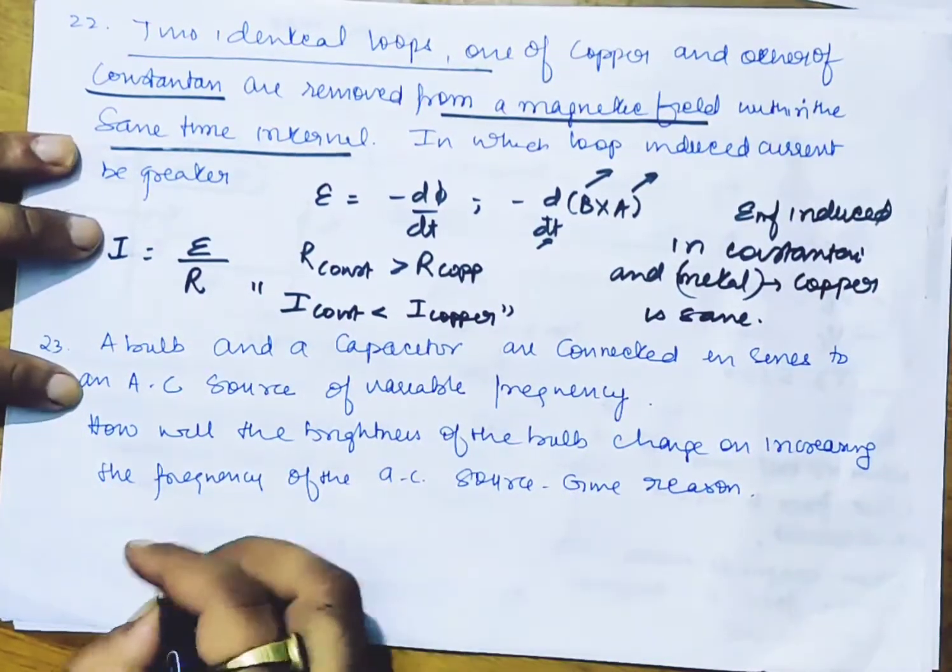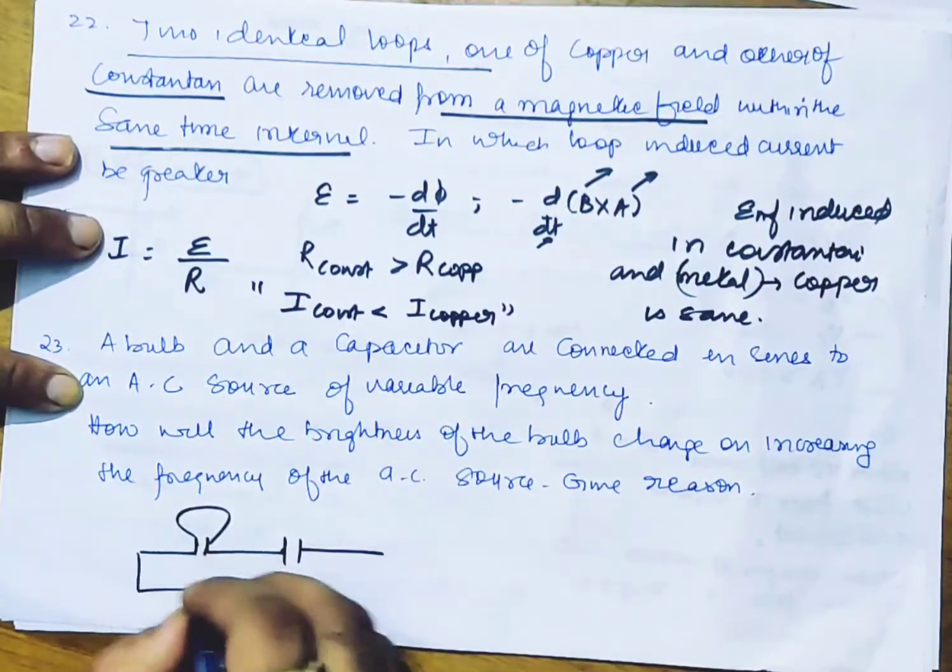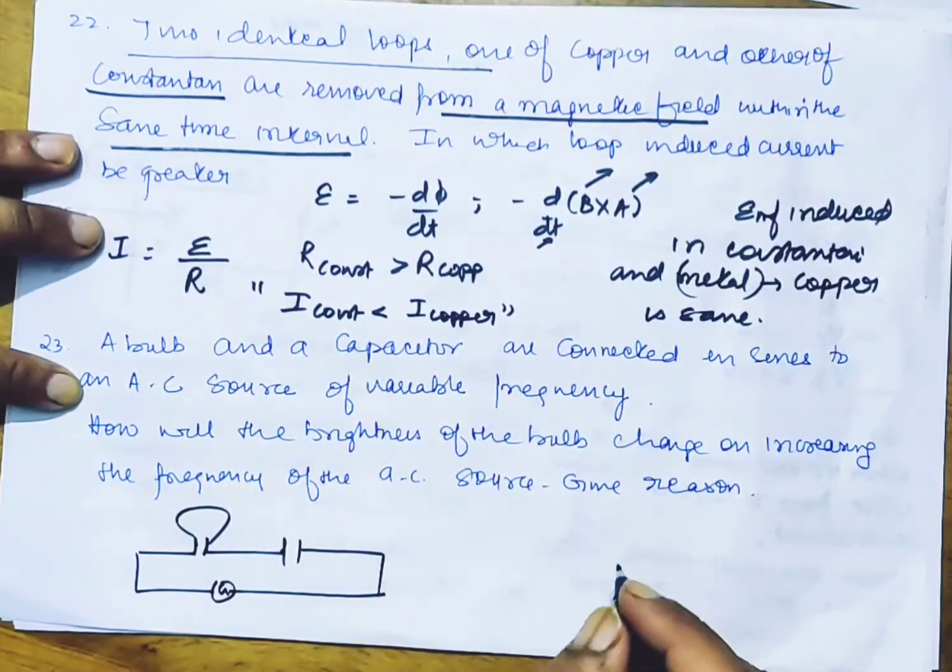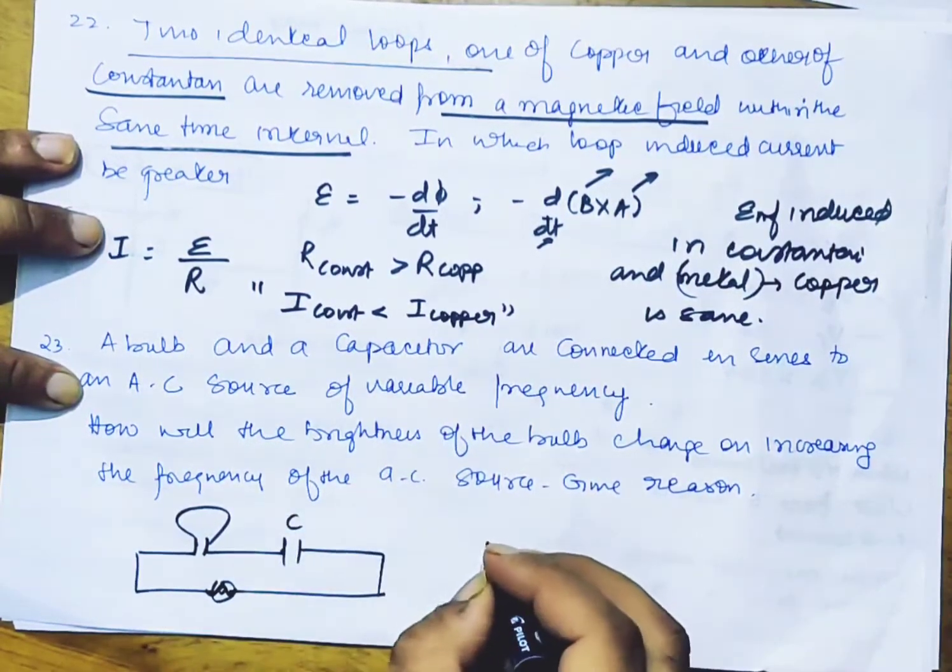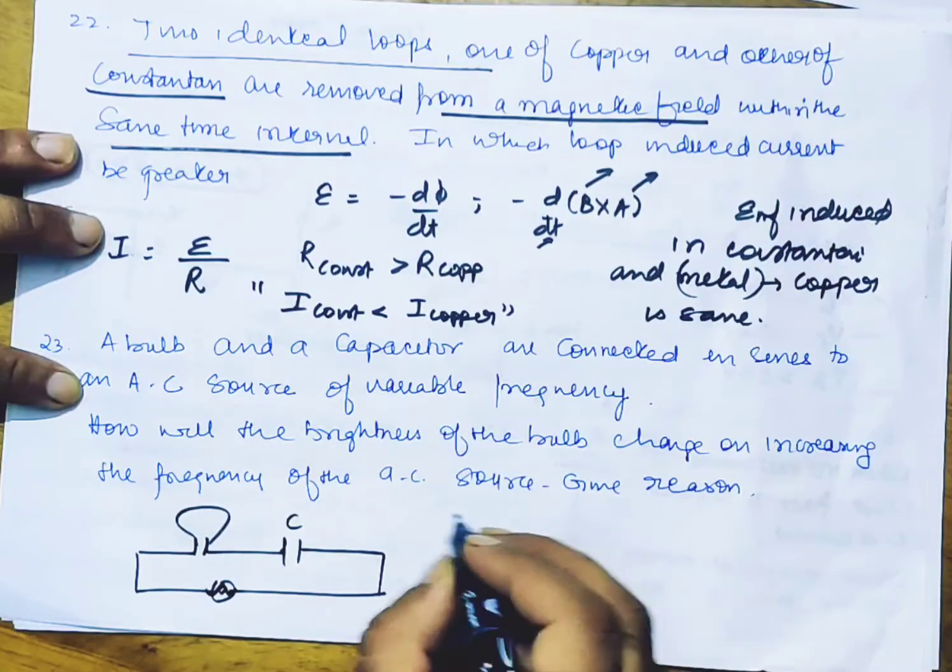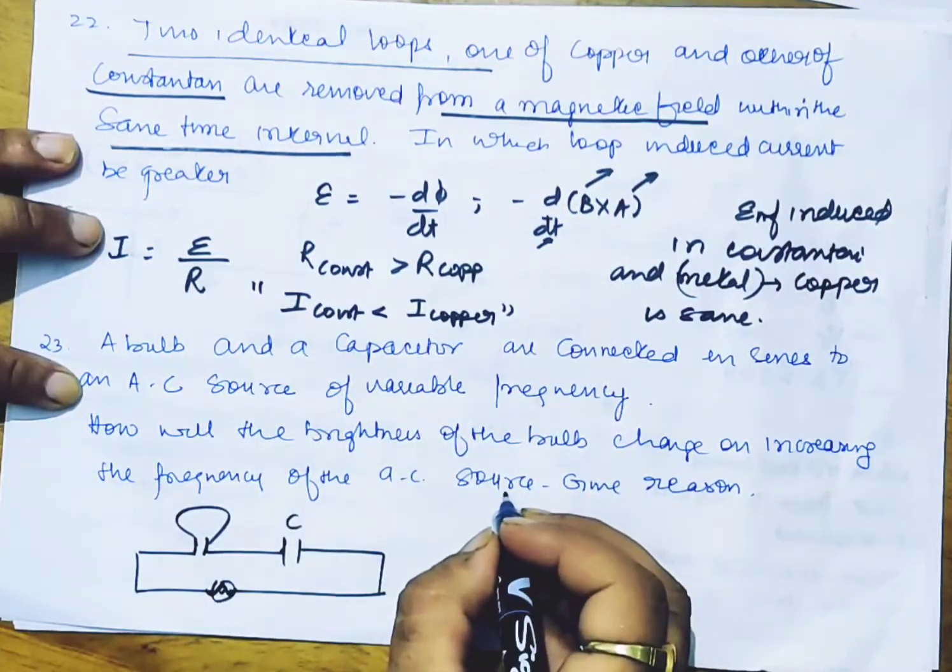Now the bulb and capacitor are connected in series. This is a bulb and it is a capacitor. It is an AC source, a sinusoidal wave, a capacitor with variable frequency. How will the brightness of the bulb change on increasing the frequency of the AC source? What is the reason?